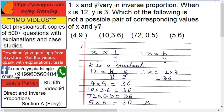If x and y vary in inverse proportion, when x is 12, y is 3, which of the following is not a possible pair of corresponding values of x and y? Which of these answer choices?